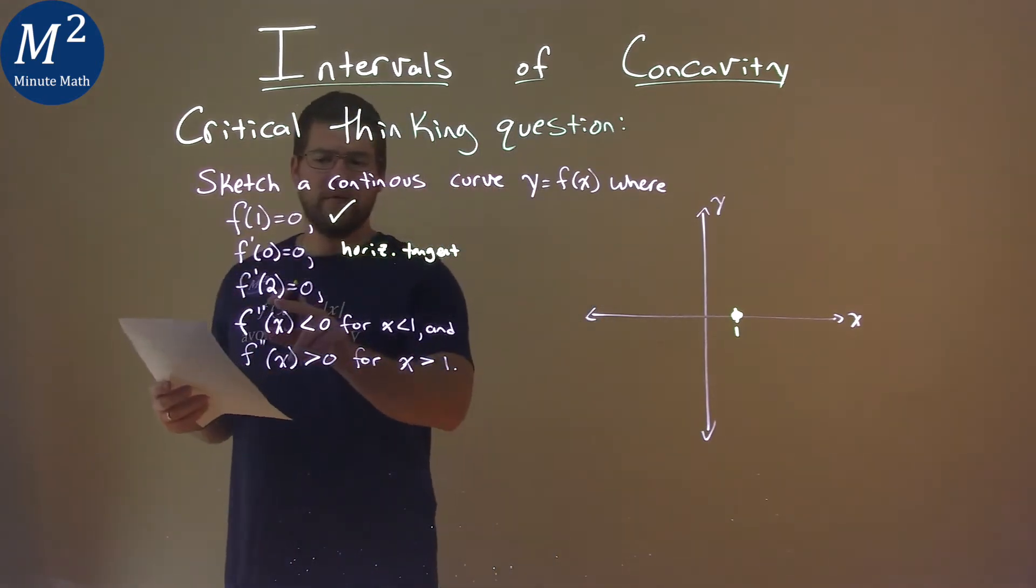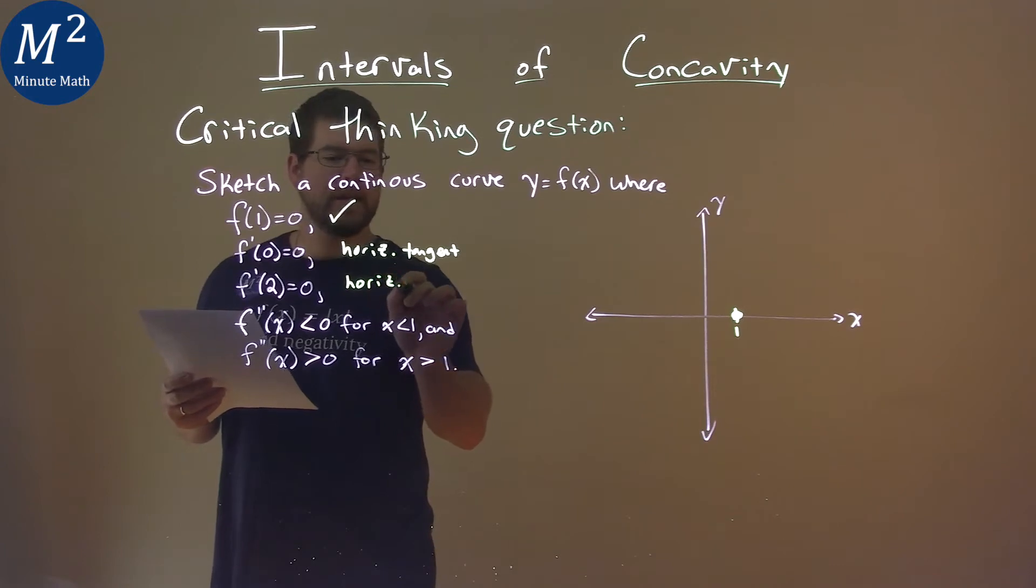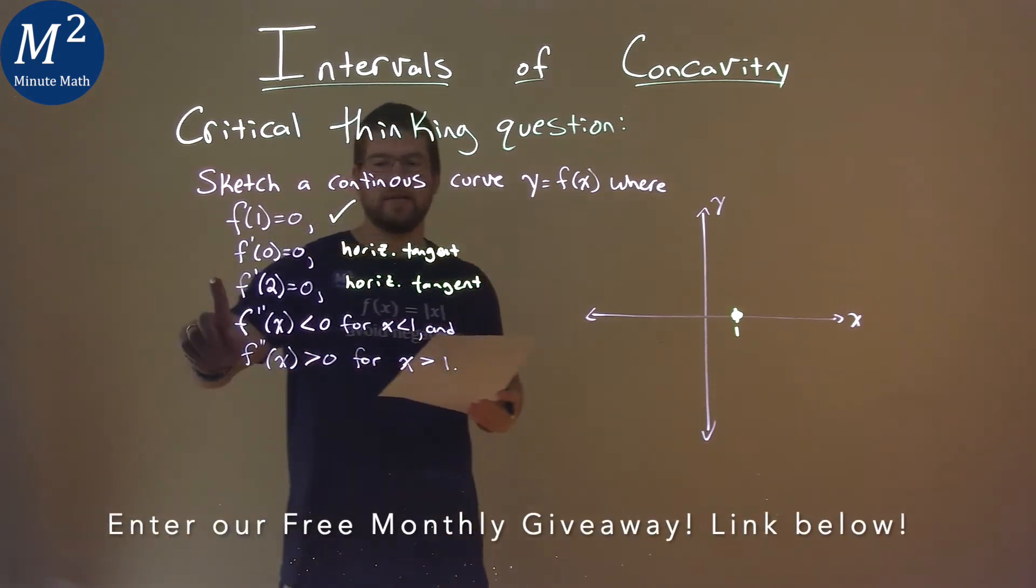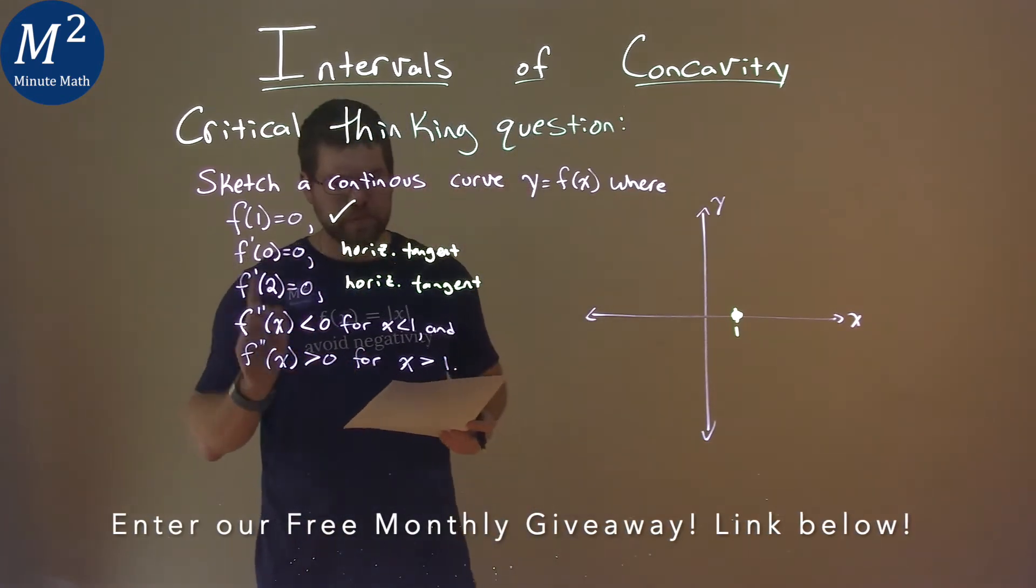Now the same thing here with f prime of 2 is also 0. We have a horizontal tangent as well going on there, because the first derivative is equal to 0 when x is 2.